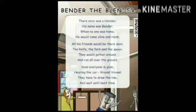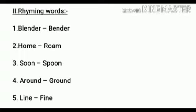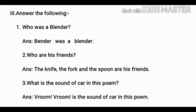Children, shall we see the evaluation part? Rhyming words: Blender–Bender, Home–Room, Soon–Spoon, Around–Ground, Line–Fine. Answer the following: Who was a blender? Blender was a blender. Who are his friends? The knife, the fork and the spoon are his friends. What is the sound of the car? Vroom vroom is the sound of the car.